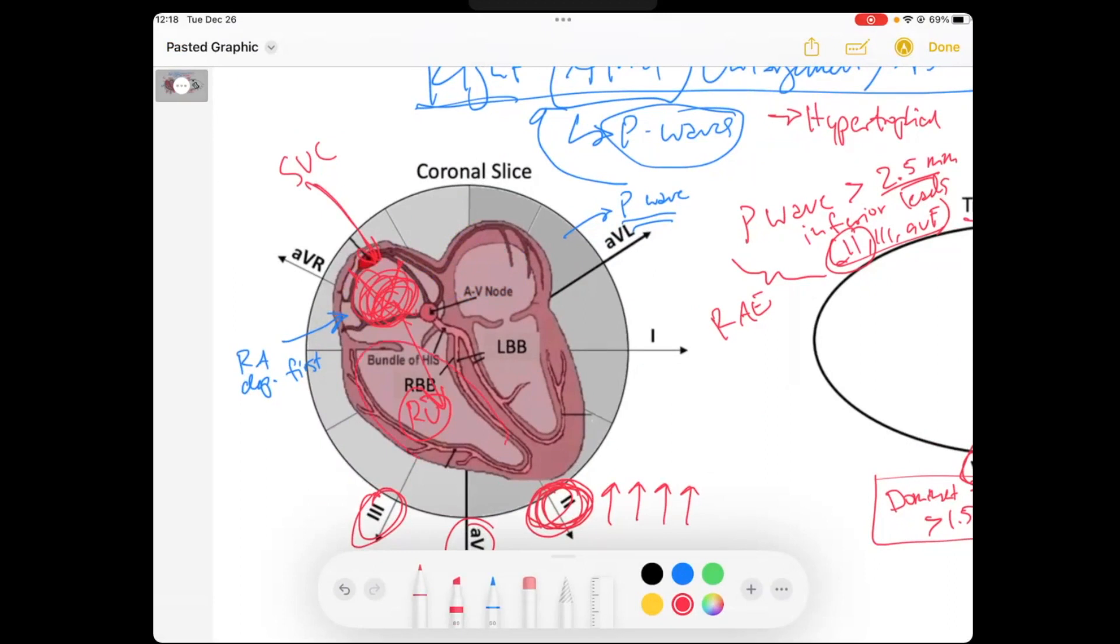So anytime you see right ventricular disease on EKG, look for right atrial disease, and we'll be going through that too. So I hope that helps, and happy EKGs.